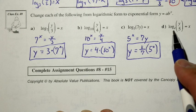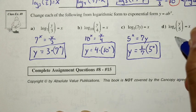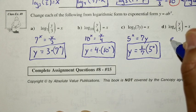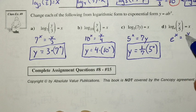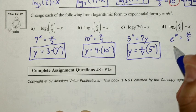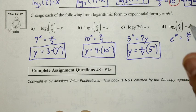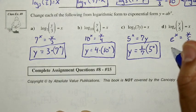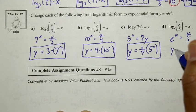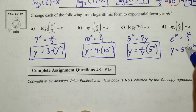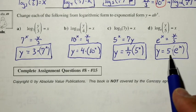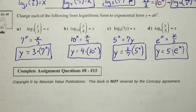Finally, in part d, we have an extra variable as a base. The base is e to the exponent x, equal to y over 5. To solve for y, we multiply by 5, so y is equal to 5 times e to the x. You now have enough tools to tackle your assignment.